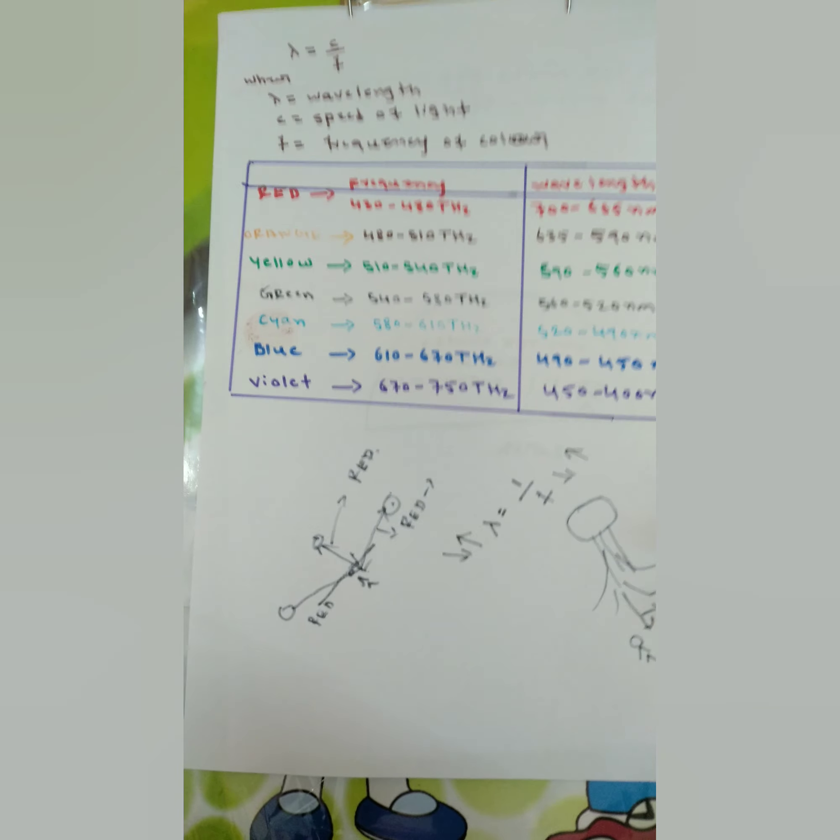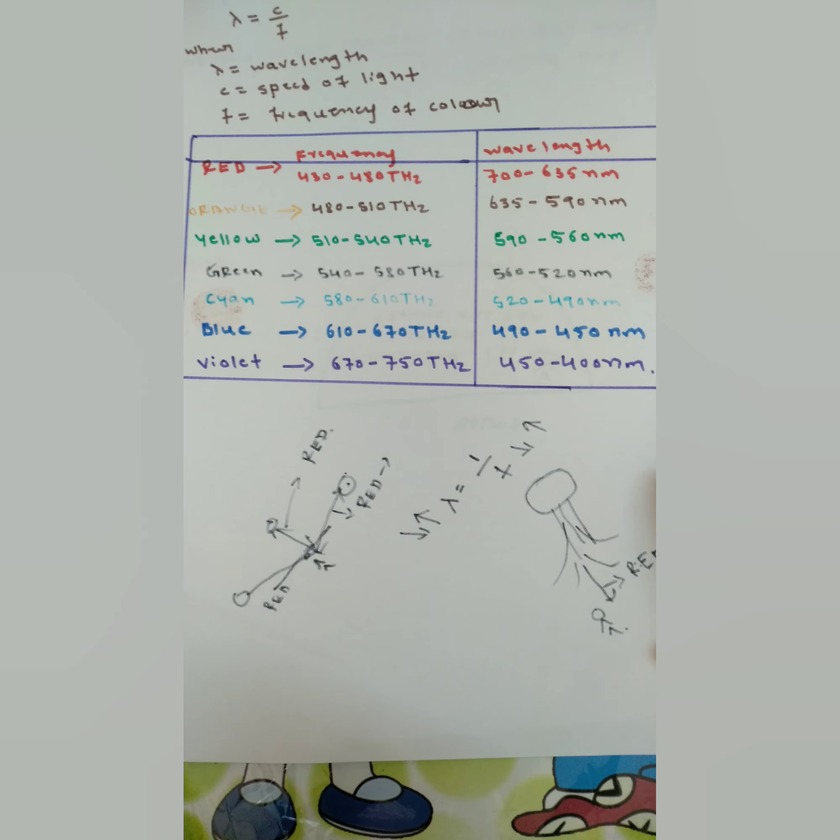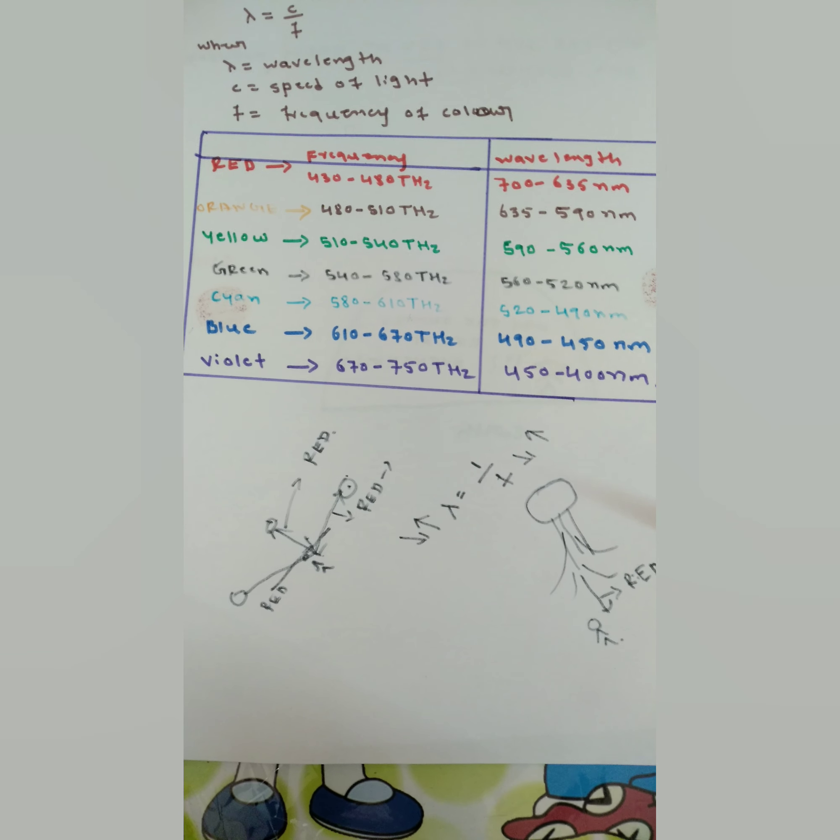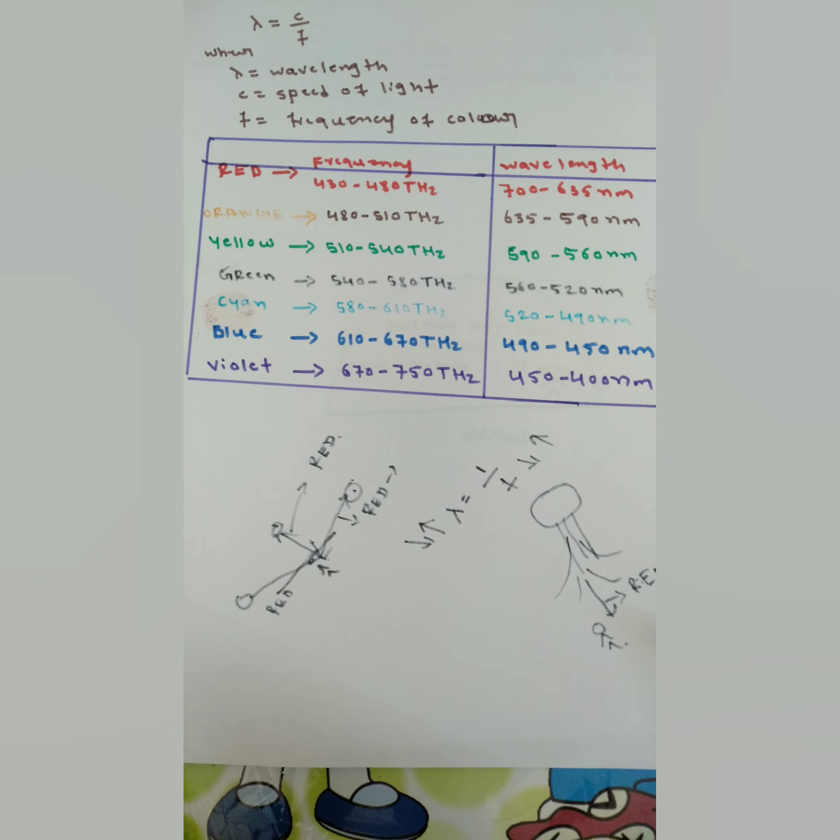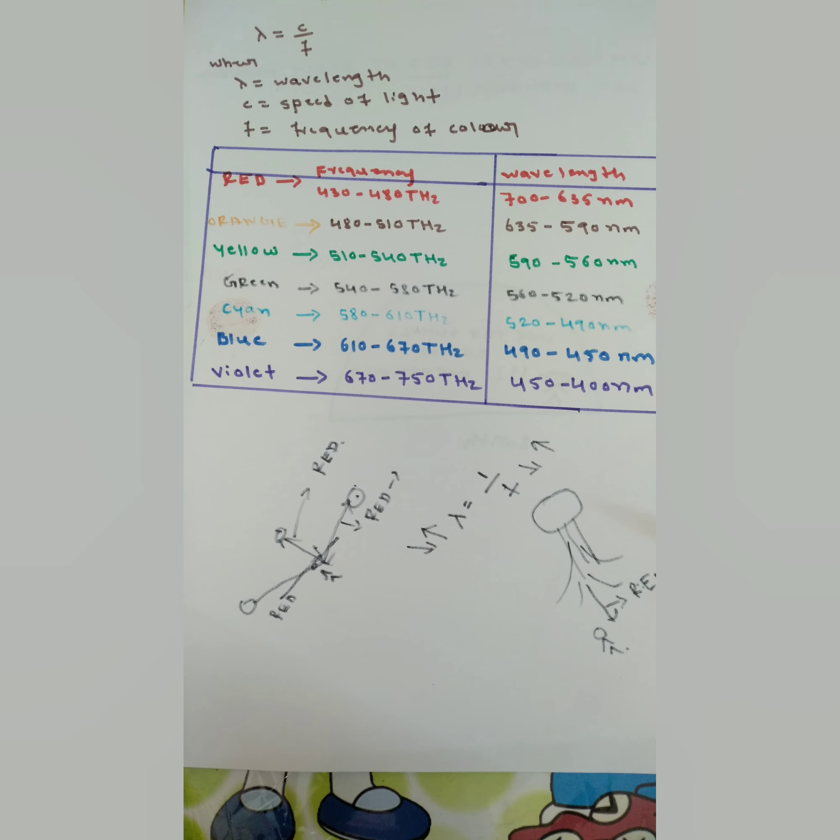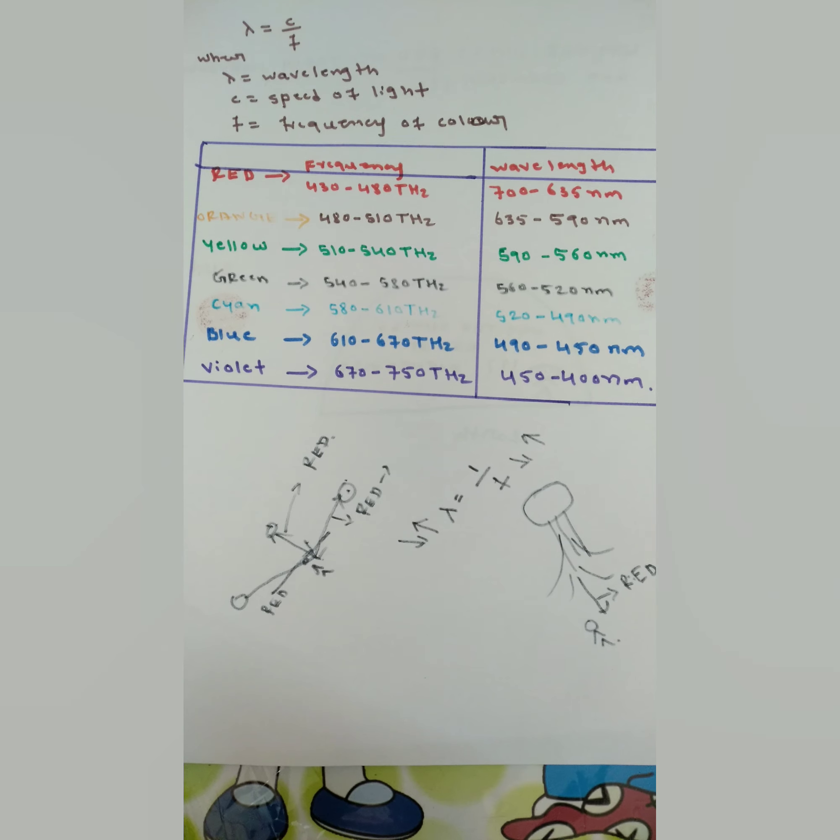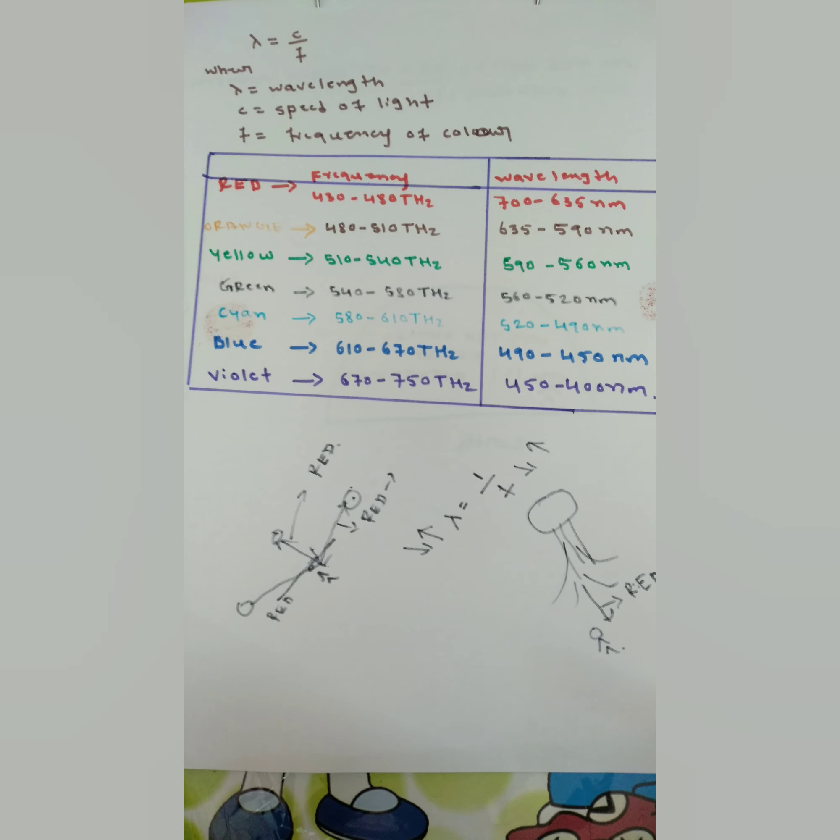That's the basic reason. I will conclude by saying that due to the higher distance and lower frequency of red color, its wavelength is more. That's why the sun looks red at morning and evening time.